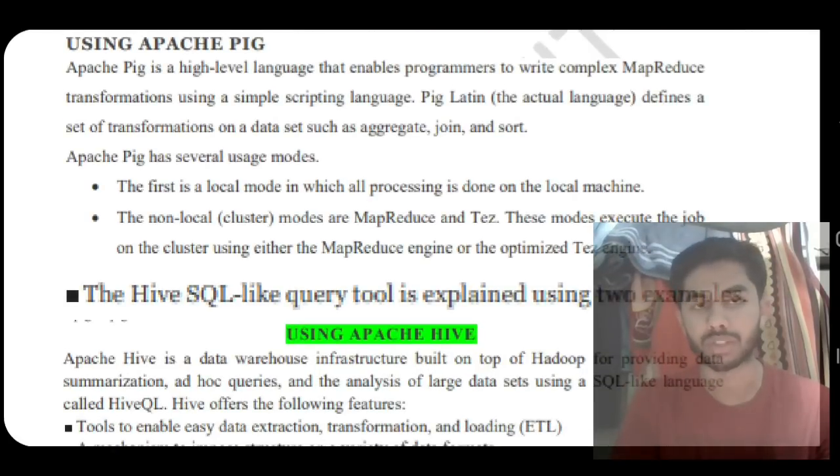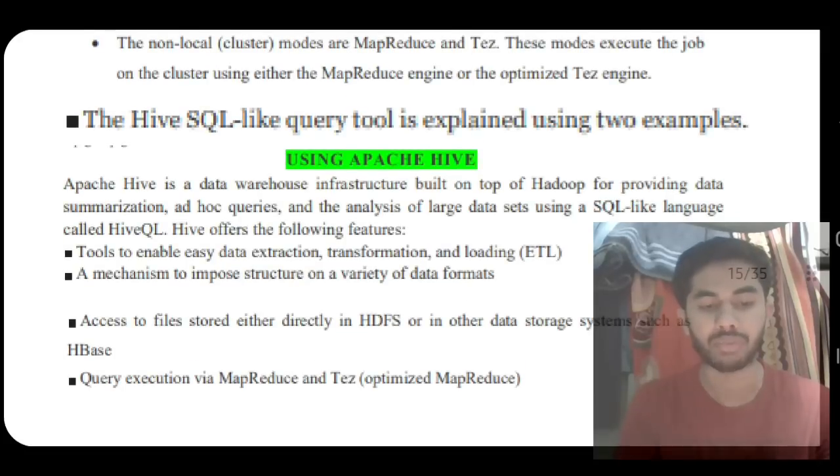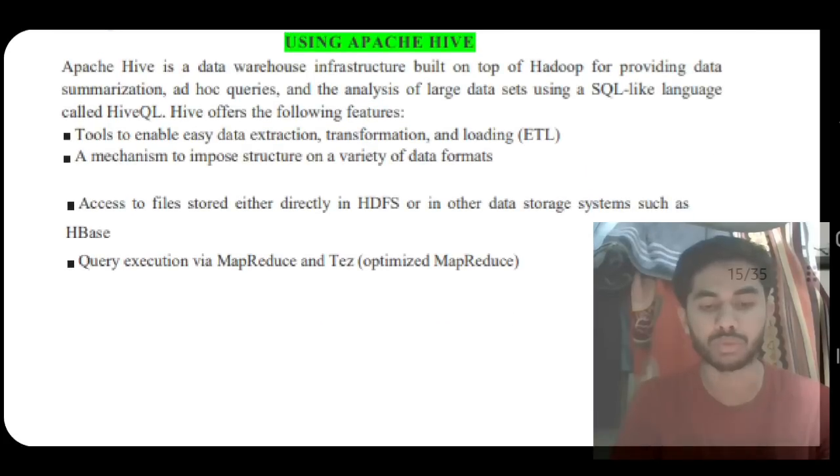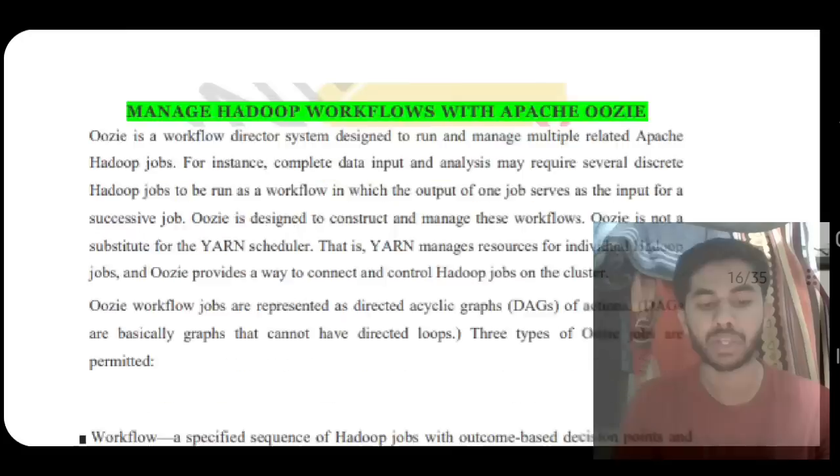What is Hive? Hive is a query tool that fetches queries. It accesses files, stores data, and does data extraction, transformation, and loading. ETL means Extraction, Transformation, Loading. Query execution is done by MapReduce, which is the optimized MapReduce.